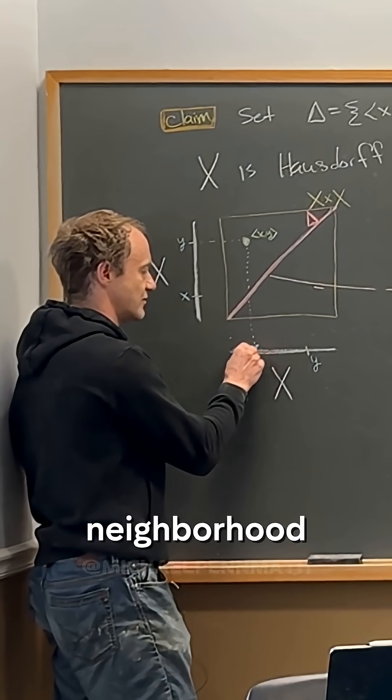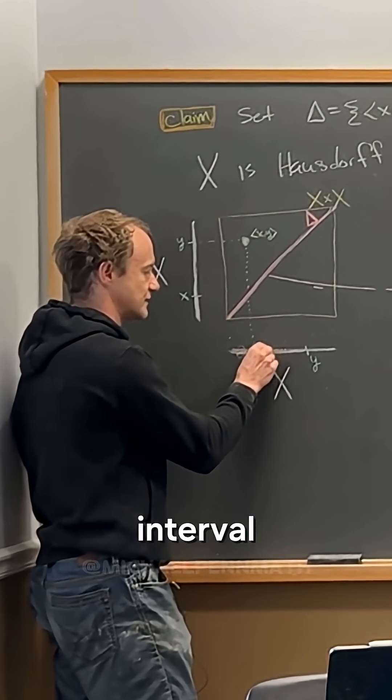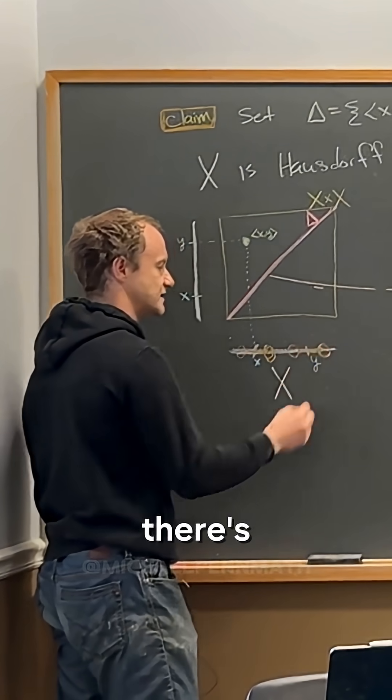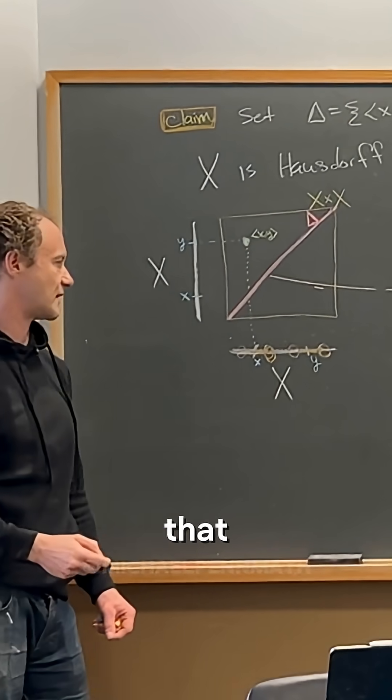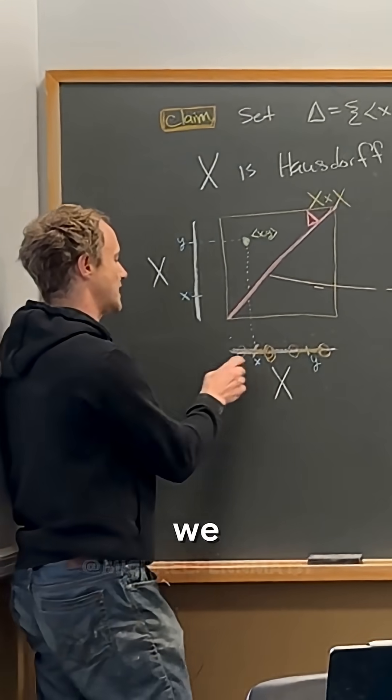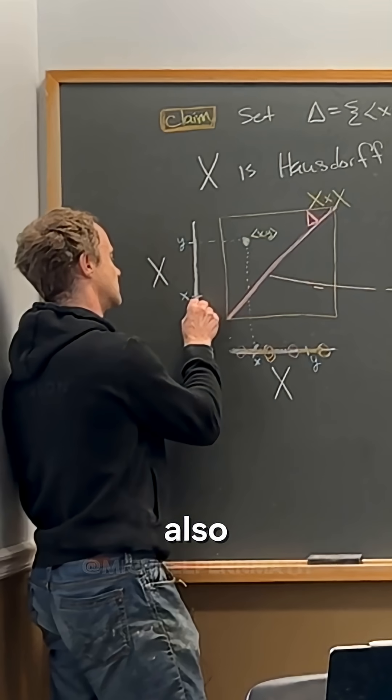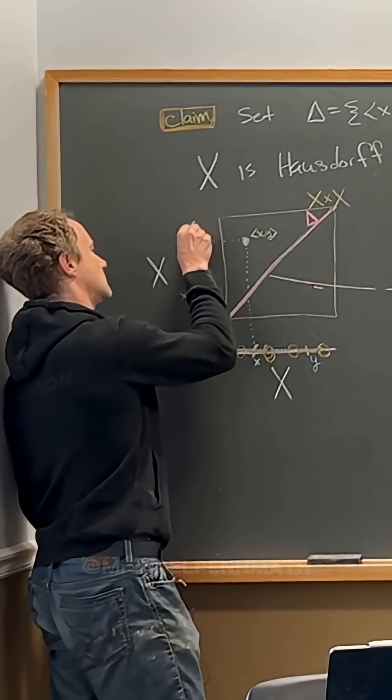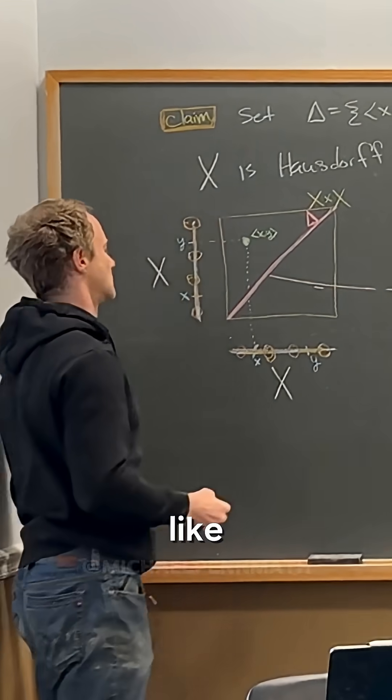So this is our neighborhood of x. I'm going to draw it as an open interval but really it's not an open interval. So there's a neighborhood of x and there's a neighborhood of y that are non-intersecting. And then we can bring those neighborhoods up here also.